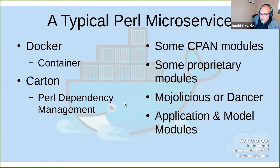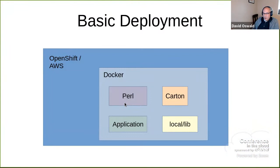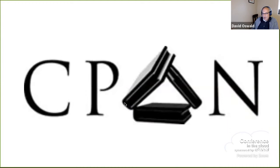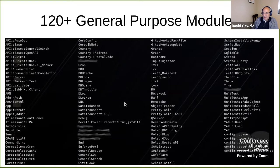So we want to avoid kitchen sink programming and tight coupling. A typical Perl microservice might be a Docker container that consists of Perl and Carton for dependency management. It might have Mojolicious or Dancer as a front end, some proprietary modules, some CPAN modules, and then some application-specific business logic modules that represent the model. We might deploy it into OpenShift or into AWS. We want to leverage CPAN as much as possible, but also leverage our 120 or so general-purpose modules.